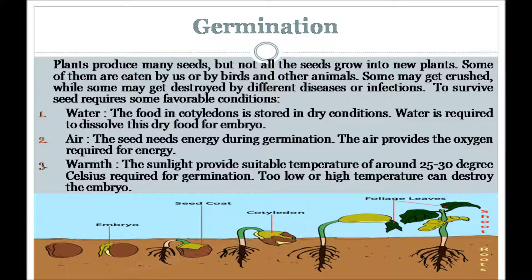The embryo inside a seed can rest without growth for a long time. The seed starts growing when it gets all the right conditions. The process by which a plant grows from a seed is called germination. However, in certain conditions seeds may not germinate even after getting proper water, air or warmth. The reason is that some seeds need to sleep for a period of time — this is called seed dormancy. Such seeds germinate after the dormancy period is over.